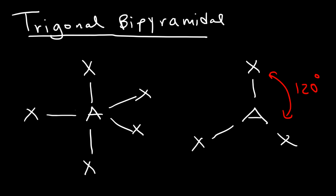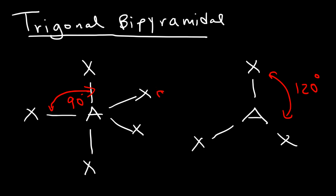The bond angle between the axial and equatorial atoms is 90 degrees. So there are three angles you need to know for the trigonal bipyramidal shape: 90 degrees between the axial and equatorial atoms, 180 degrees between the two axial atoms, and 120 degrees among the three equatorial atoms in the middle.